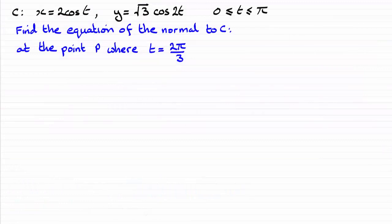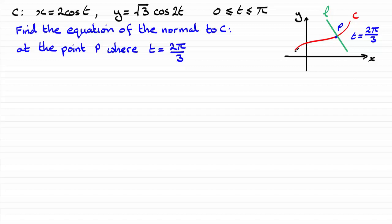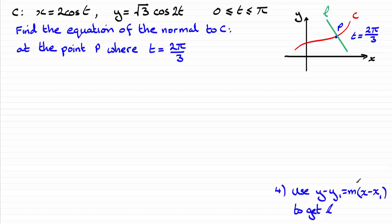For this part of the question, we've got to find the equation of the normal to curve C at the point P where t equals 2 pi upon 3. I find it easier to draw a sketch. I've drawn a squiggly line and drawn the normal to this line at point P. The equation of line L has the form y minus y1 equals m times x minus x1.